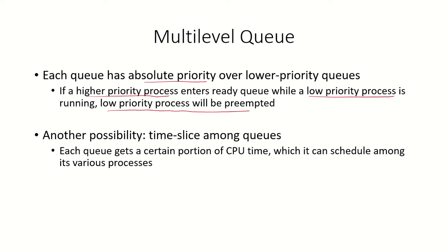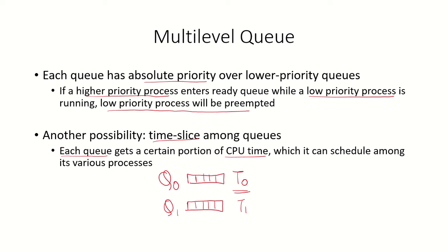Another possibility is time-slicing among the queues — each different priority queue gets a certain portion of CPU time. For example, Q0 will get time T0 of the CPU, and this T0 will be divided amongst all processes in Q0. Similarly, Q1 will be given time T1, which will be allocated among the various processes in Q1. This is another approach: time-slicing amongst the queues.